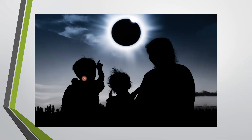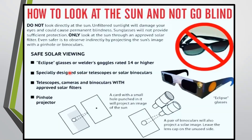So if you want to see, if you are very curious about it, there are a few ways you can see it, but it is advisable to stay home. Now how to look at the sun and not go blind? Do not look directly at the sun — unfiltered sunlight will damage your eyes and could cause permanent blindness. Sunglasses will not provide sufficient protection. Only look at the sun through an approved solar filter. Even safer is to observe indirectly by projecting the sun's image with a pinhole or binoculars.